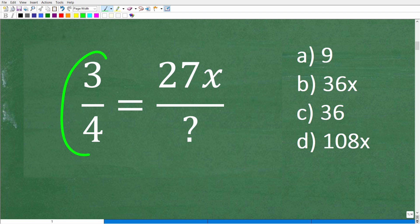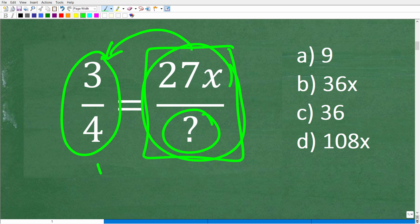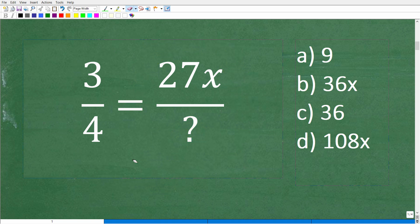All right, so we have a fraction, 3/4, and we have this other fraction over here, 27x over something. Now, what do you think this problem is asking us? Well, whatever this fraction is, it's the same as this fraction, or this fraction here, 3/4, is the same as this fraction. So, really, what we have to do is figure out the denominator right here such that when we plug it into this fraction, and if we reduce this fraction or simplify it, we get back to the fraction 3/4.